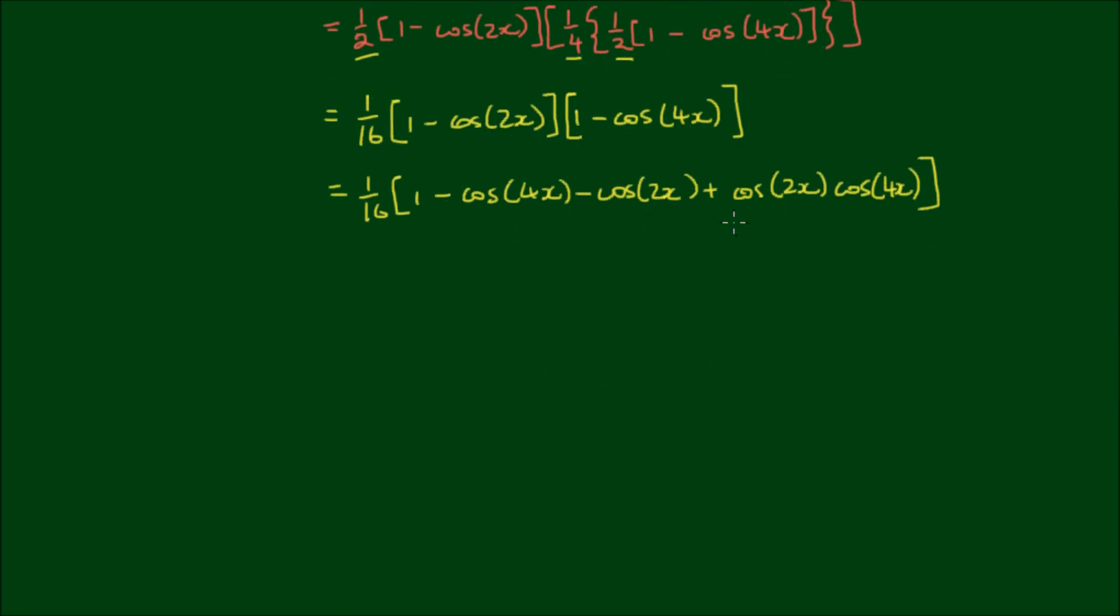Now recall from our last video that when we discovered the product to sum formulas, cos of u by cos of v, we can write this as a half of cos of u minus v plus cos of u plus v. So it follows that cos of 4x by cos of 2x is equal to 1 half outside of cos of 4x minus 2x is equal to 2x plus the cos of 4x plus 2x is equal to 6x.